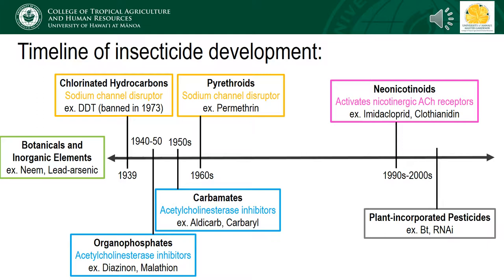Notice the color of the boxes. Each insecticide has what is described as a mode of action, or specific aspect of the insect's physiology that is targeted. Though chlorinated hydrocarbons and pyrethroids are different classes of insecticides separated by about 20 years of research and development, they have the same mode of action, which is to disrupt sodium channels in insects. The same is true for organophosphates and carbamates, which are acetylcholinesterase inhibitors. This is important because it means that once an insect develops resistance to one of these chemicals, it will have cross-resistance to others within the same class.